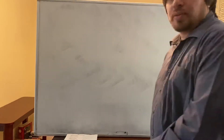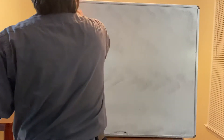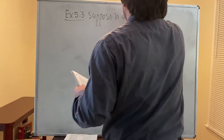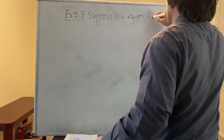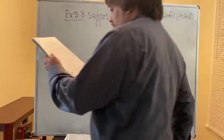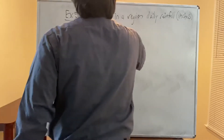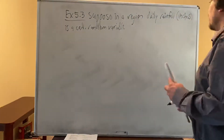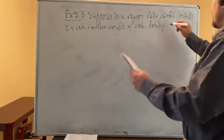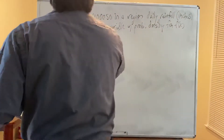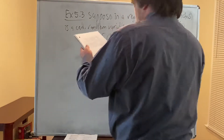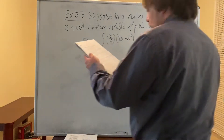Welcome to the next video. We continue with example 5.3. Suppose in a region, daily rainfall measured in inches is a continuous random variable — we're not rounding to the nearest integer — with probability density function f(x) = (3/4)(2x - x²) for 0 < x < 2, and 0 elsewhere.